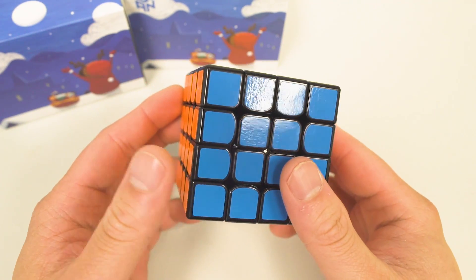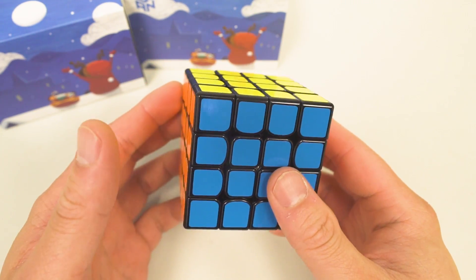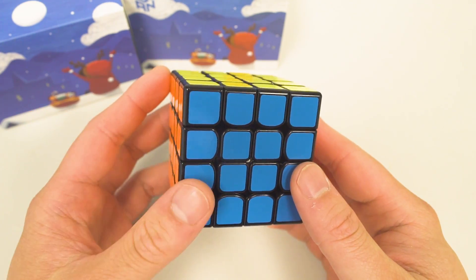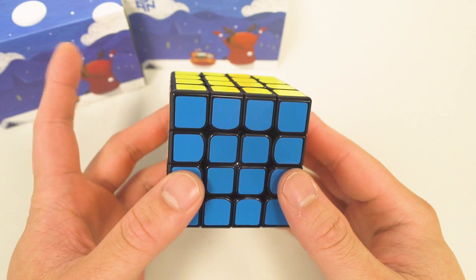The first thing you'll notice about this cube is that it's 60 millimeters, which is a really nice compact size for a 4x4. I really like it and I think a lot of people would like it as well.